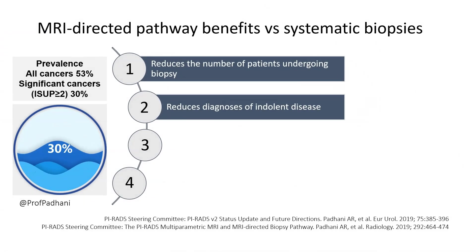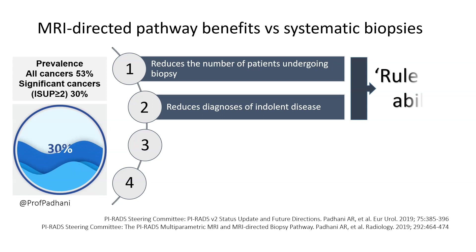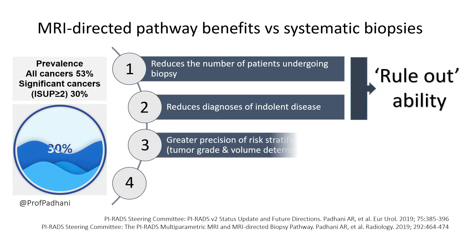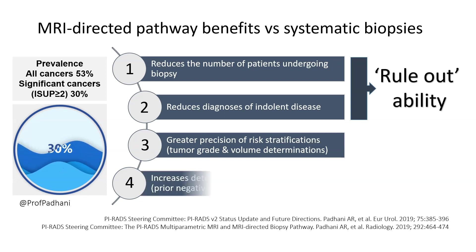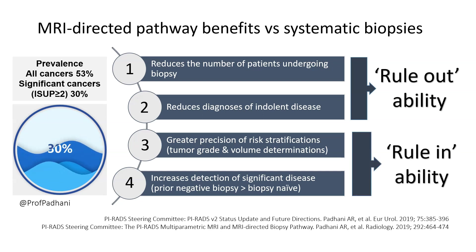We know that there are four major benefits of the MRI-directed pathway. The major benefit is reduction in the number of patients undergoing biopsy, and it also reduces the diagnoses of indolent cancers — this is related to the rule-out ability of MRI. But we also know that there is a greater precision of tumour stratification, and a slight increase in the detection of clinically significant disease, particularly for biopsy-naive patients, and this relates to the rule-in ability of the MRI pathway.